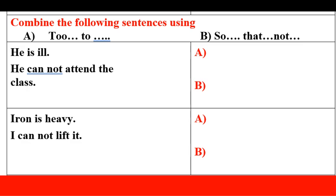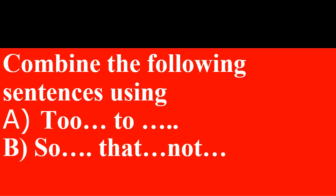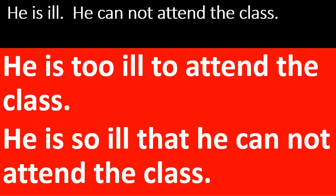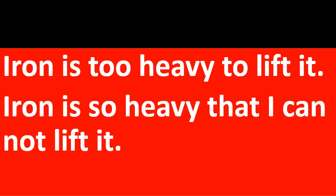Combine the following sentences using too...to and so that...not. He is ill — he cannot attend the class. Iron is heavy — I cannot lift it. So here two sentences are to be used with too...to and so that...not. He is too ill to attend the class. He is so ill that he cannot attend the class. Iron is too heavy to lift. Iron is so heavy that I cannot lift it. This is the way of using too...to and so that...not.